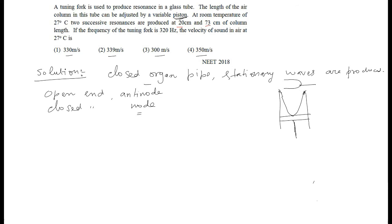So, there is a node here, and this is the location of the antinode. Of course, this length will be lambda by 4. This is called fundamental mode, or we can even call it as first harmonic. Here the piston level can be adjusted.